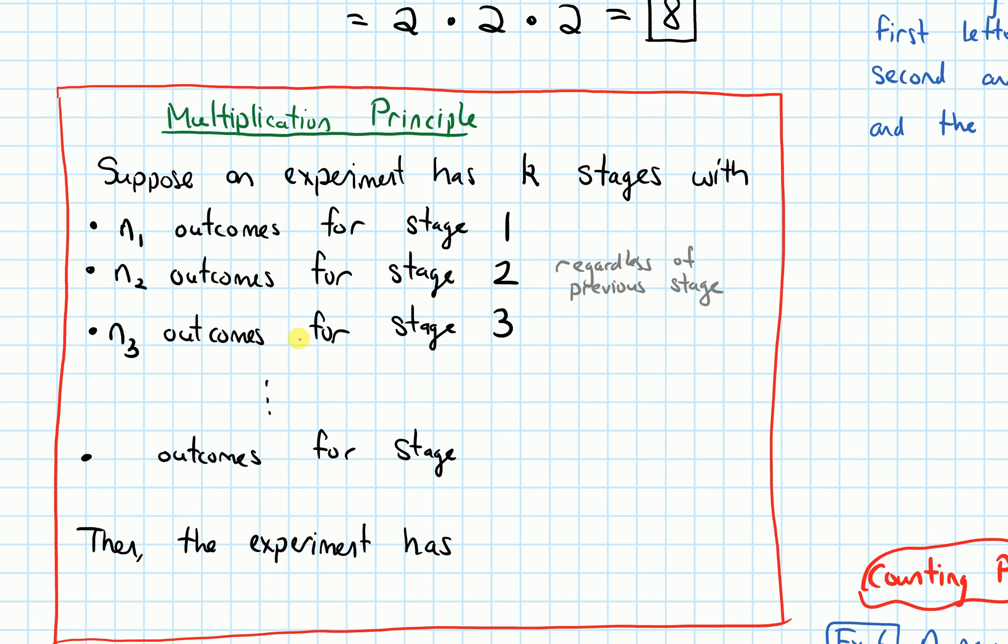And then similarly in stage three, I need this to be true regardless of now the two previous stages. I'm just going to abbreviate previous stages.